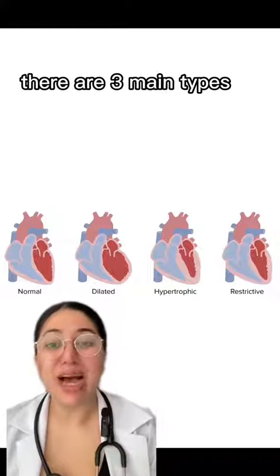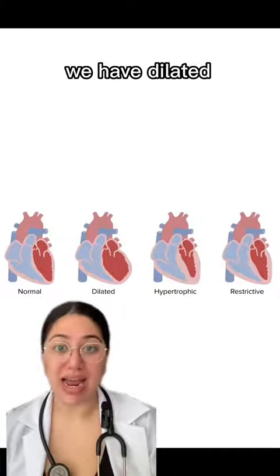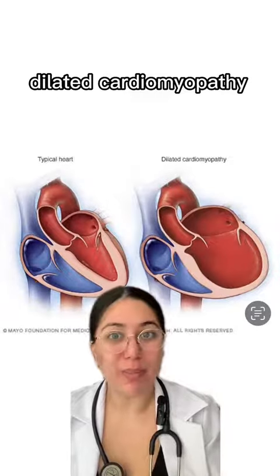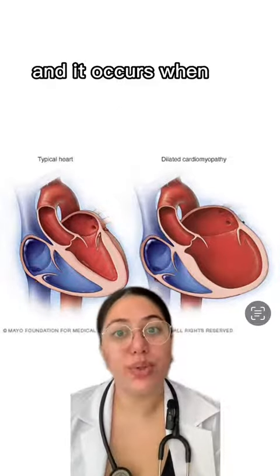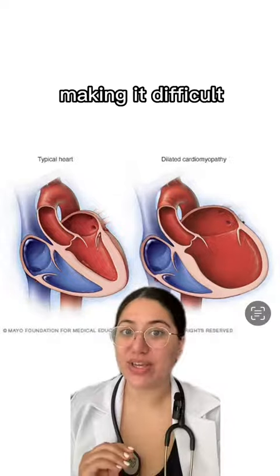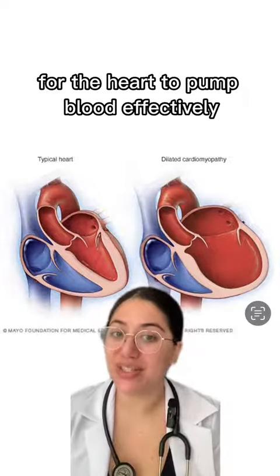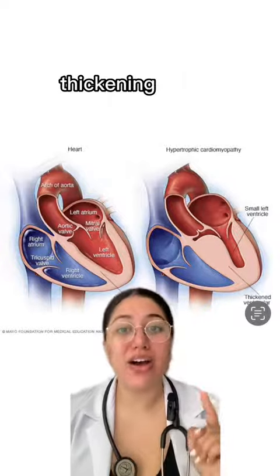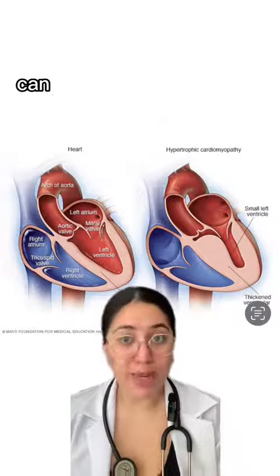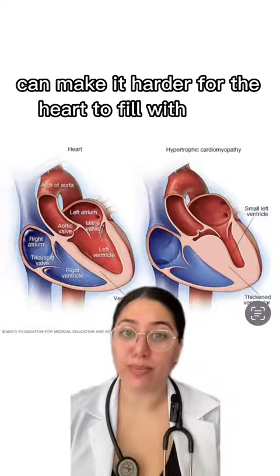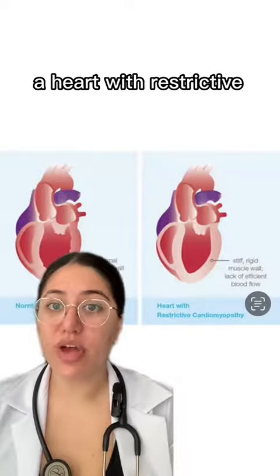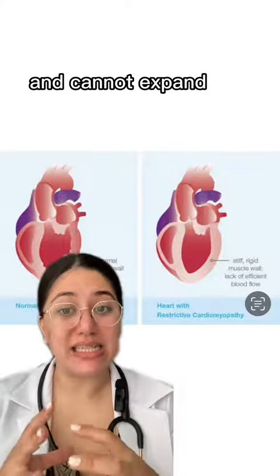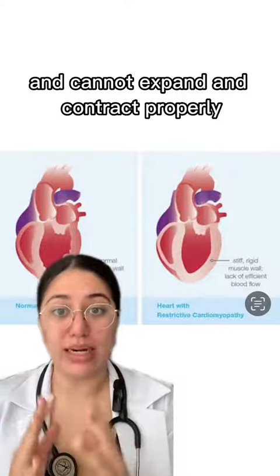There are three main types of cardiomyopathy: dilated, hypertrophic, and restrictive. Dilated cardiomyopathy is the most common type and occurs when the heart muscle becomes weak and enlarged, making it difficult for the heart to pump blood effectively. Hypertrophic cardiomyopathy is characterized by thickening of the heart muscle, which can make it harder for the heart to fill with blood. Restrictive cardiomyopathy occurs when the heart muscle becomes stiff and cannot expand and contract properly.